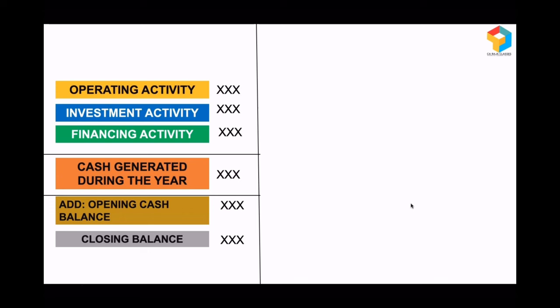By aggregating cash flows from operating, investment, and financing activities, I can get the cash generated during the year. Adding the opening cash balance automatically gives me the closing cash balance. This statement tells me from where money had come and where money had gone out. It also acts as a reconciliation statement — by adding the cash generated during the year with the opening balance, I get the closing balance.